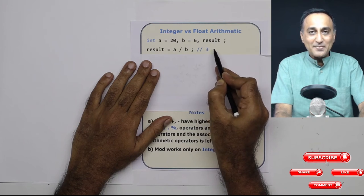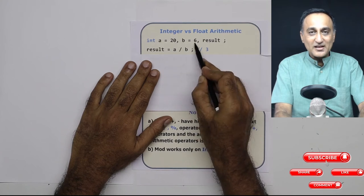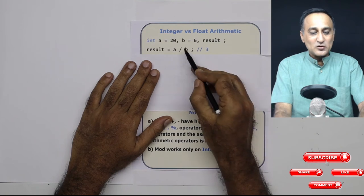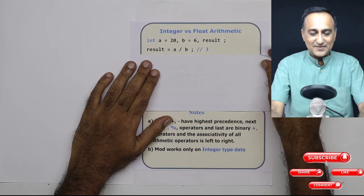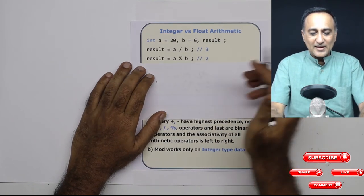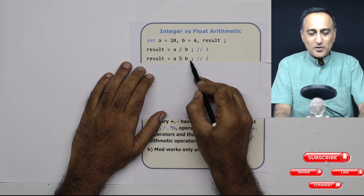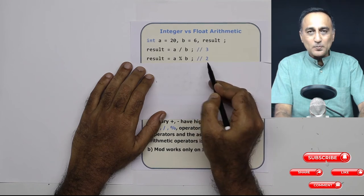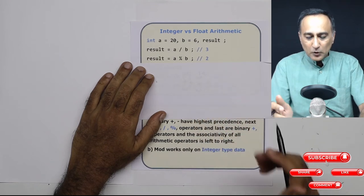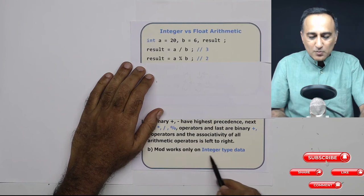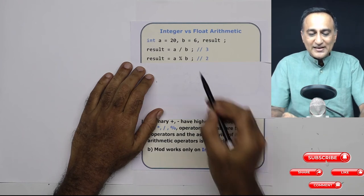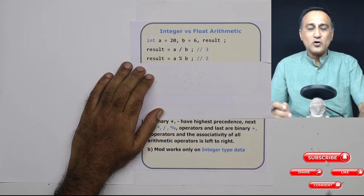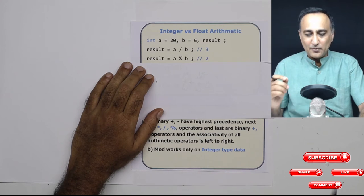Suppose you divide 10 by three, if this was 10 and this was three, it would not be three point three three three, it would simply just be three. So integer division is like this. If I do result of A mod B, if I try to do division of 20 by six, the remainder is going to be two. An important point to note, you can use the mod operator only on the integer type of data, you cannot use the remainder operator on the floating or real type of data.